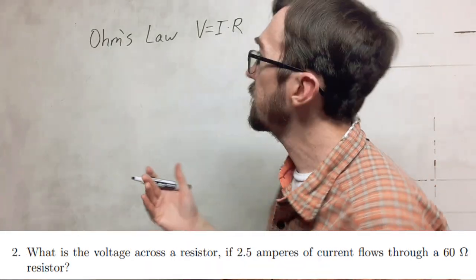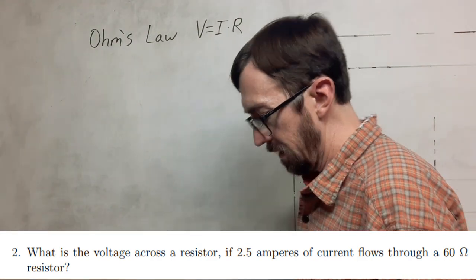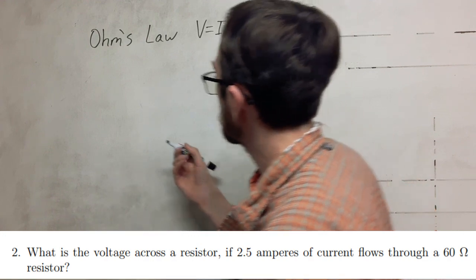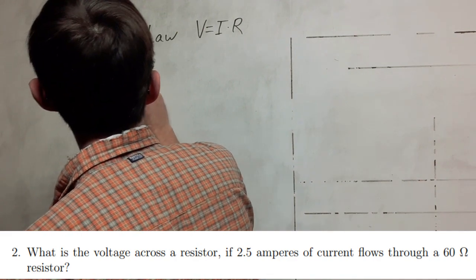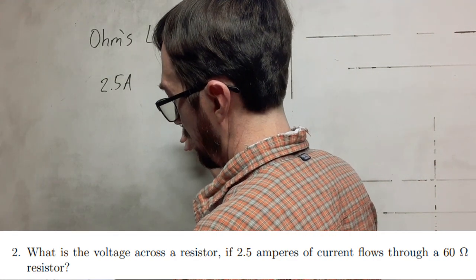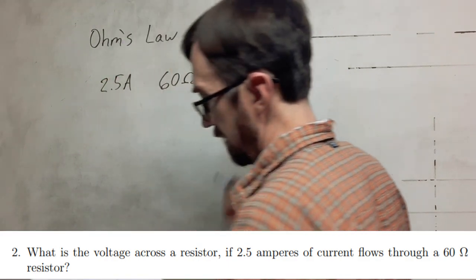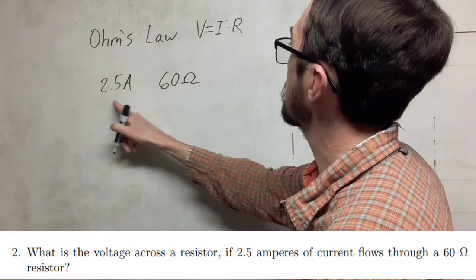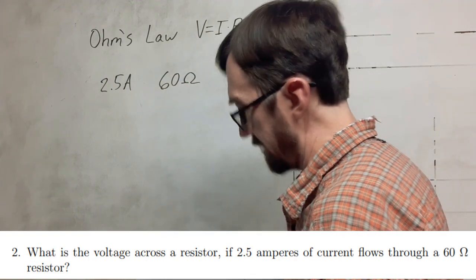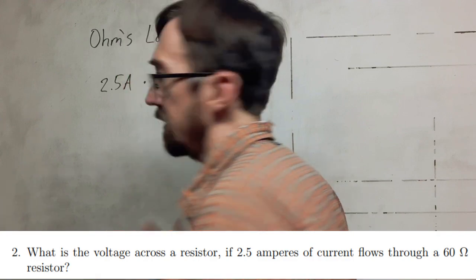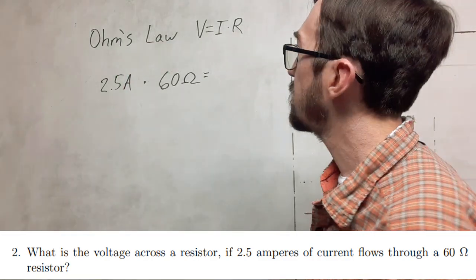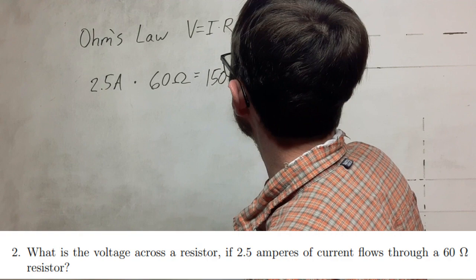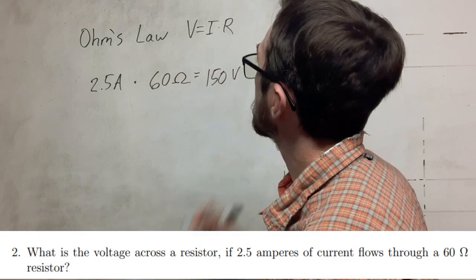For the next problem we're going to use Ohm's law. We have a voltage across a resistor with 2.5 amperes of current flowing through a 60 ohm resistor, and we want to know the voltage. We're going to take the current times the resistance to get the voltage — just multiplication. So we get 150 volts as the answer.